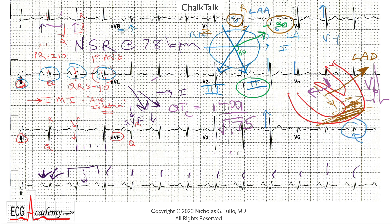In summary, what we have is a normal sinus rhythm with a borderline first-degree AV block, a borderline QT interval, left atrial abnormality, and evidence of an old inferior MI. The more you do this, the more comfortable you'll get identifying abnormalities and seeing the big picture — developing a system so you don't miss anything. Until next time, this is Dr. Nick with the ECG Academy. Thanks for watching.